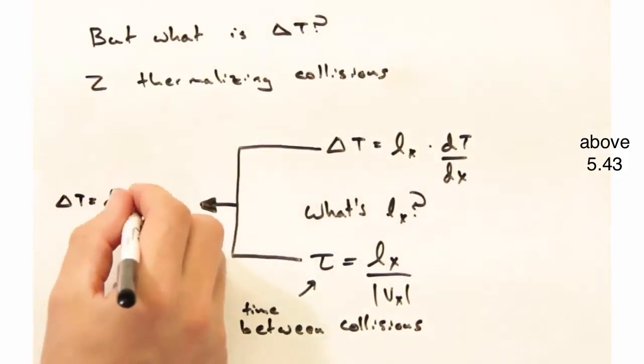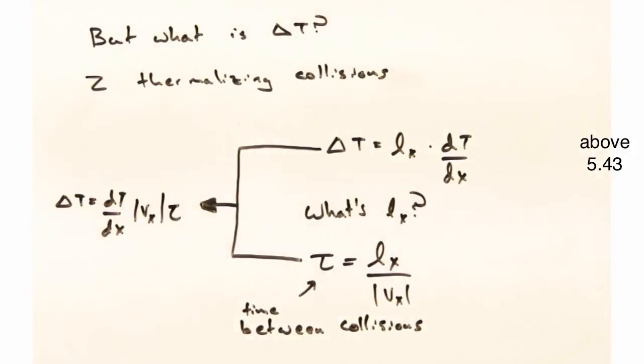Bringing these expressions together, we can write that delta t is the temperature gradient, times the velocity, times your relaxation time between collisions.